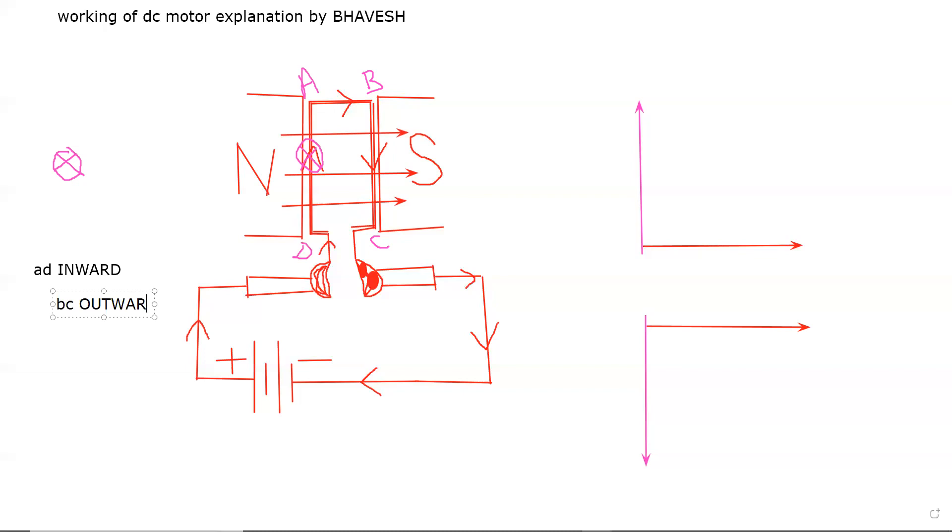So if AD is inward and BC is outward, we can use these symbols. This is why AD is inward and BC is outward.